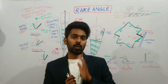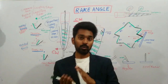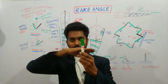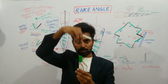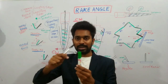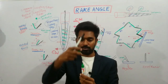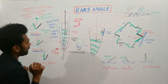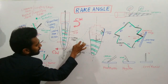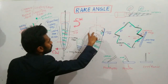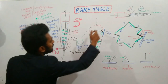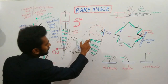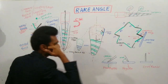Now let us see what is rake angle and how it differs from helical angle. If you take a cross section of a file and observe from the top — that means if you cut the file at this part and observe from the top view — this is the exact view, which has the cutting blades. These are the cutting blades and the rest of the file. These are the cutting edges, and this is the long axis of the file.